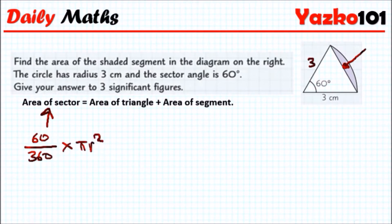If you type this in your calculator, you should get an answer of 3/2 π. So the area of the sector is done.